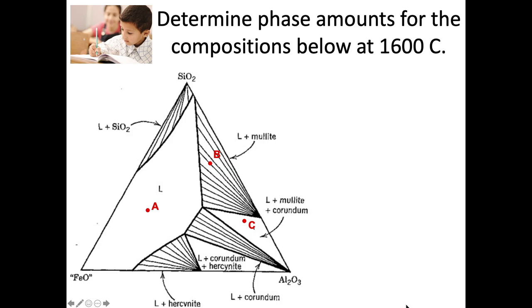We're back and we're going to talk about how to determine the phase amounts for these compositions. A is in a single-phase region of liquid, so it's 100% liquid. Now I want to go ahead and talk about B. B is a composition inside a two-phase field, which means we can apply the binary lever rule, just like we did with the binary system when we had two phases in equilibrium.